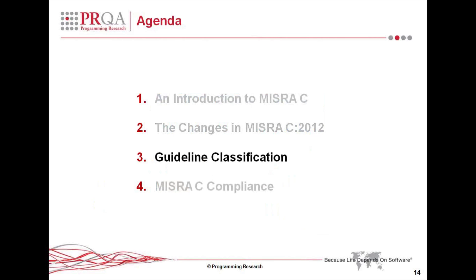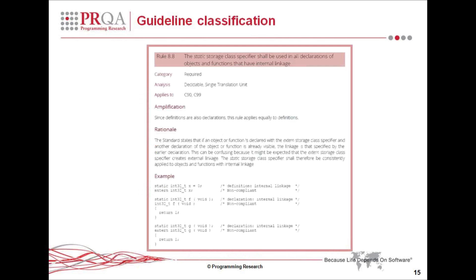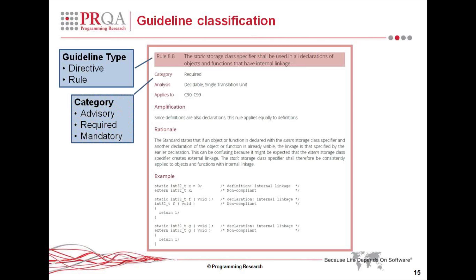Guideline classification is one of the things that's changed in the third version of MISRA C. There is a new system of classifying guidelines. The most fundamental and upfront change is the fact that a guideline is now one of two types: a guideline is either what we call a directive or a rule. We'll go into the detail of this more in a minute.